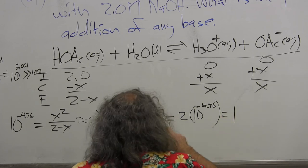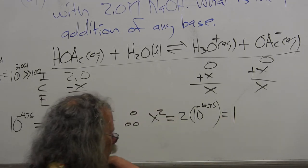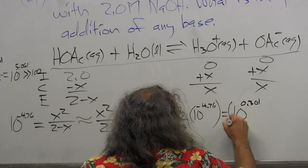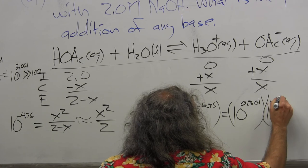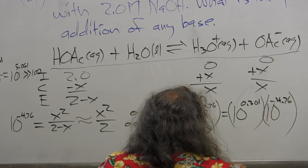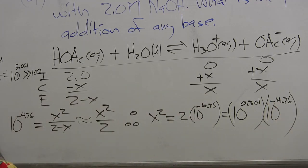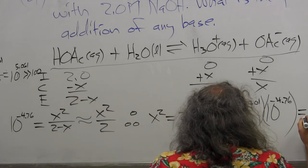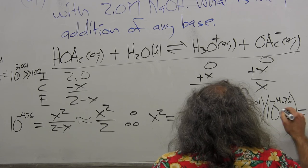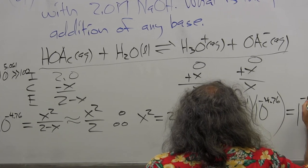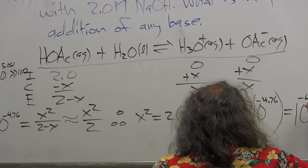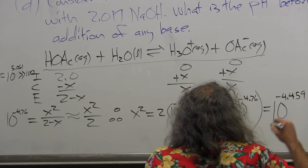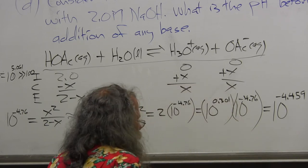Well, it's squared still. Okay. So what is 2? 10 to the 0.301 times 10 to the minus 4.76. What do the rules of exponents have me do? I add, and so that's equal to 10 to the minus 4.459. And that's equal to X squared.